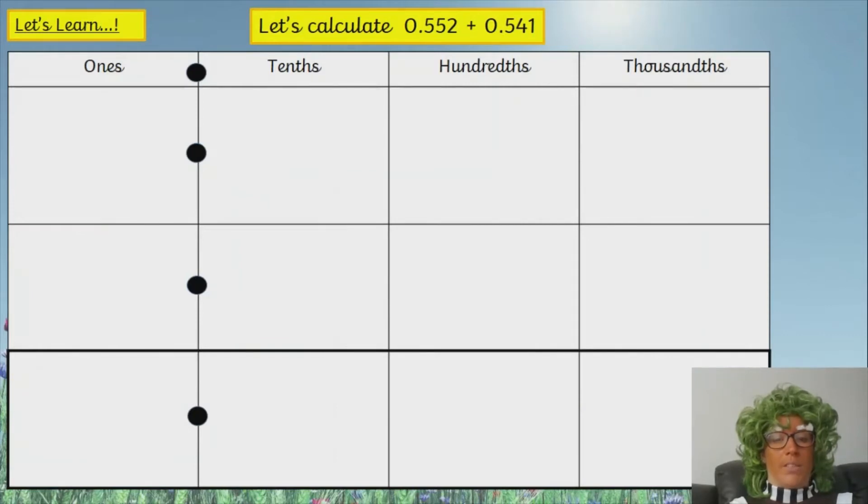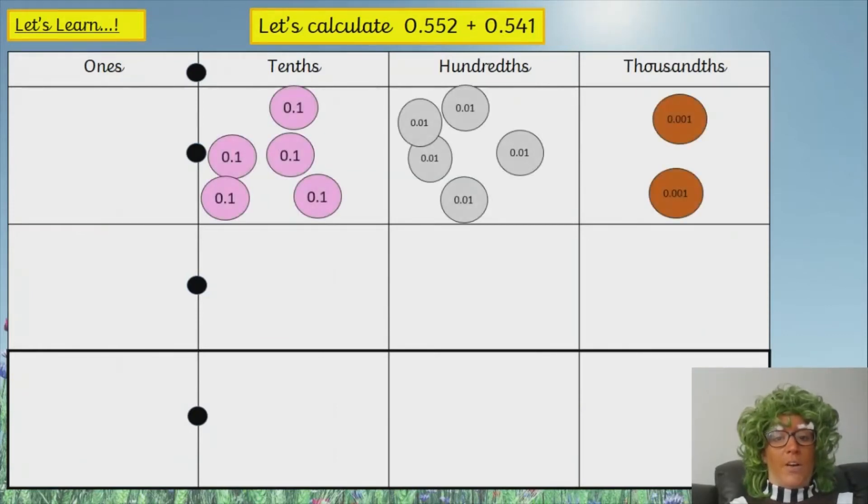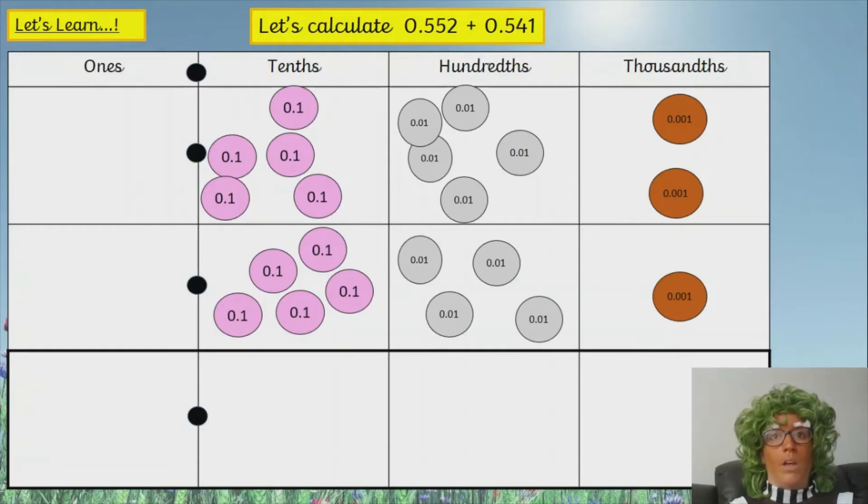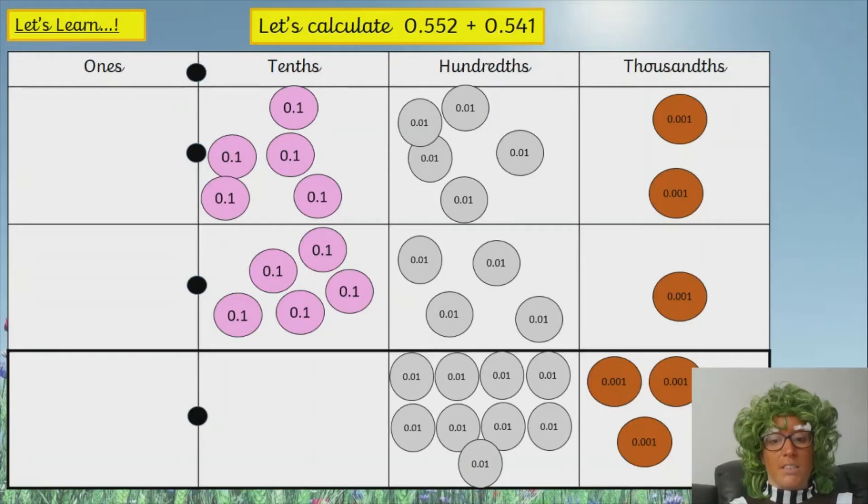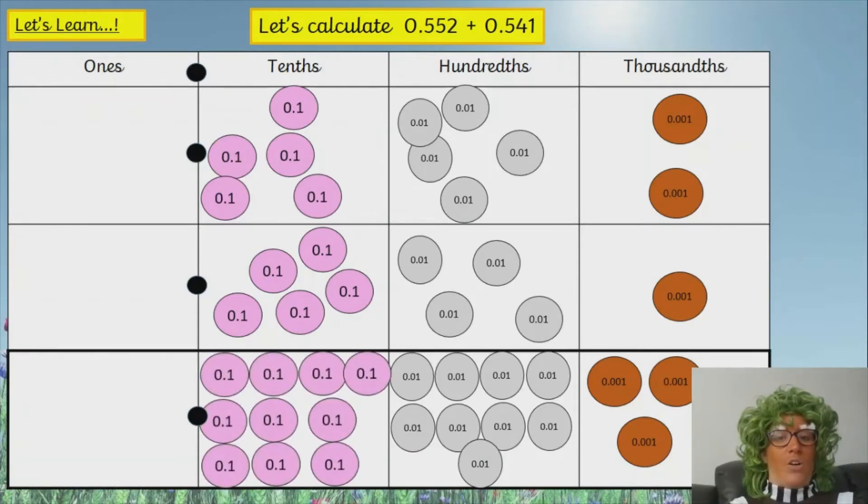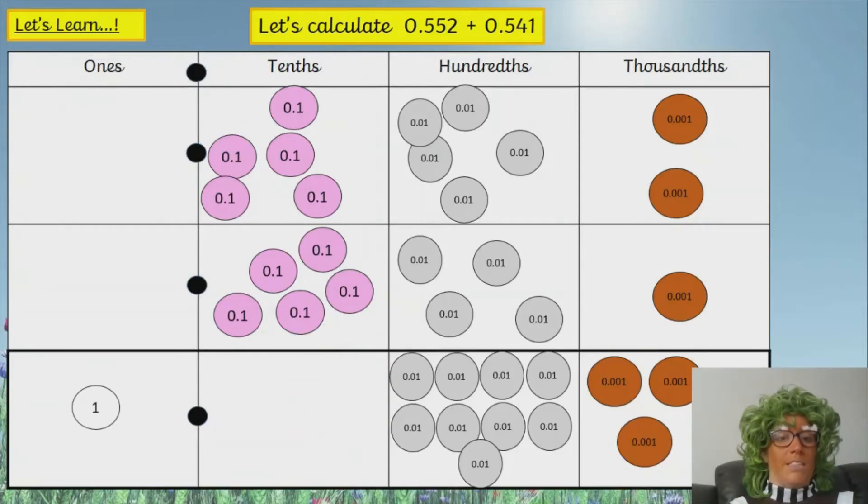Let's have another go. This time, we've got thousandths as well. So, we've got zero-point-five-five-two plus zero-point-five-four-one. Which column are we going to start with? It's our thousandths. So, we've got two-thousandths add one-thousandth, which is three-thousandths. Five-hundredths plus four-hundredths is nine-hundredths. And then we've got five-tenths add five-tenths is ten-tenths. We can exchange those for one whole. So, our answer for this one is one-point-zero-nine-three.